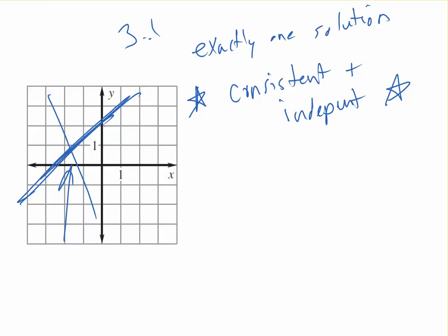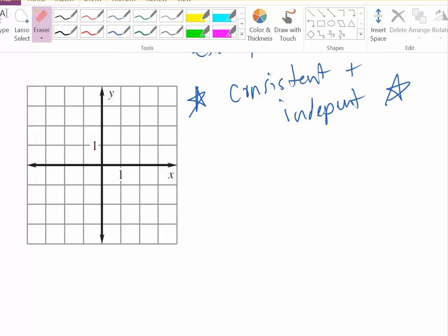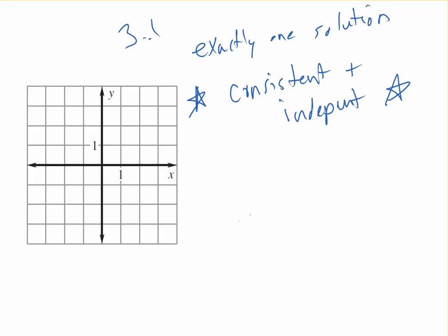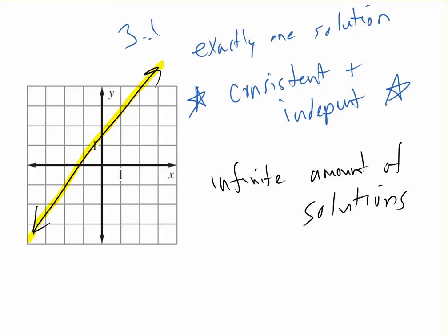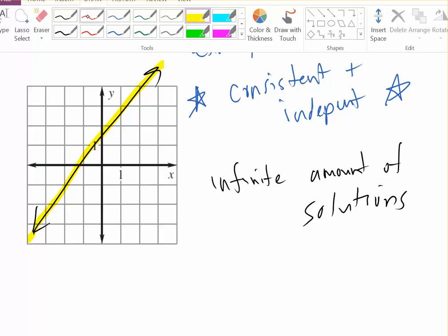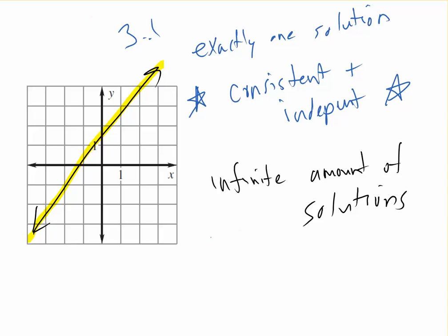Now, sometimes, this won't be the case. Sometimes, there will be an infinite amount of solutions. And I'm sure you can already imagine, when there's an infinite amount of solutions, that's when you have the exact same line. So you have a line like this. And then, guess what? The other equation turns out to be the exact same line. So you graph it again right over there. So this is an infinite number of solutions. And when this happens, we say they are consistent. Consistent means there is an answer, at least one. We say they are dependent. When you have the same line.